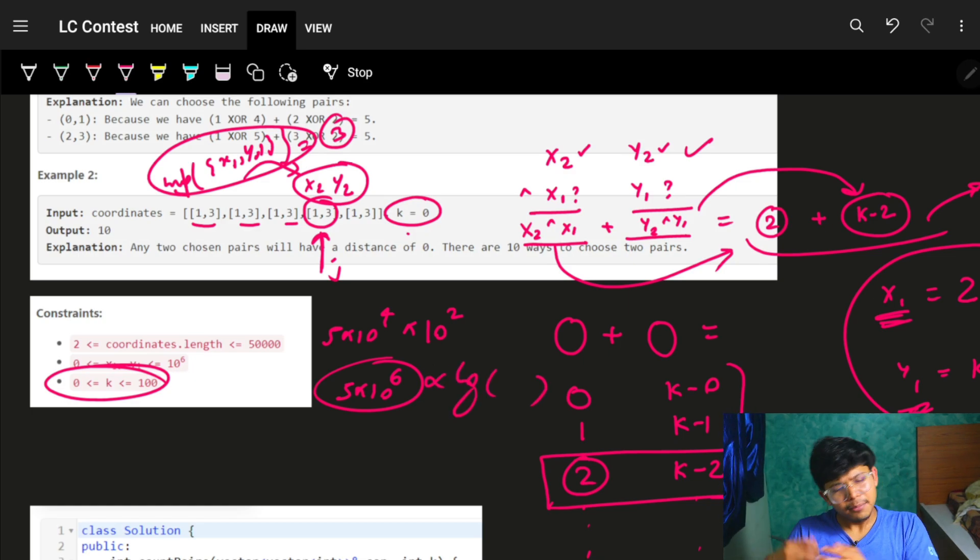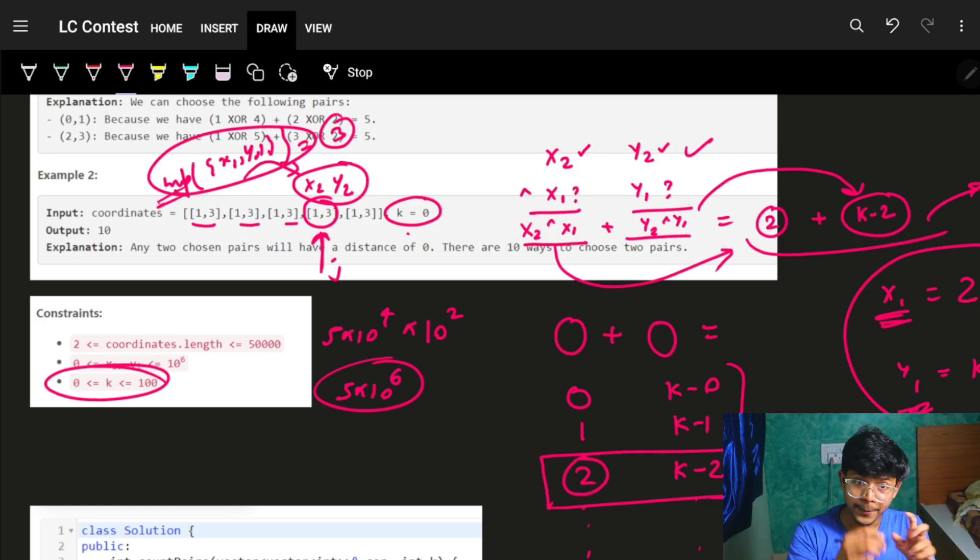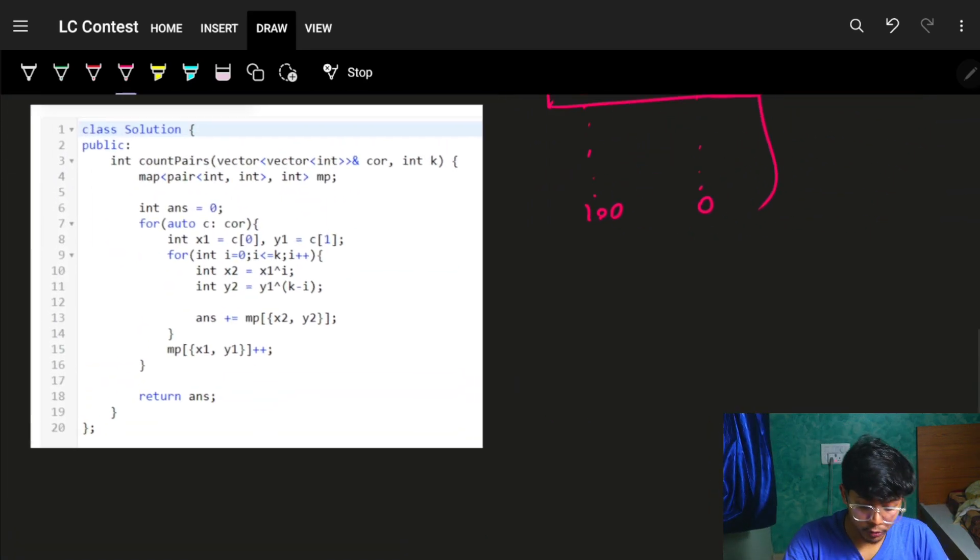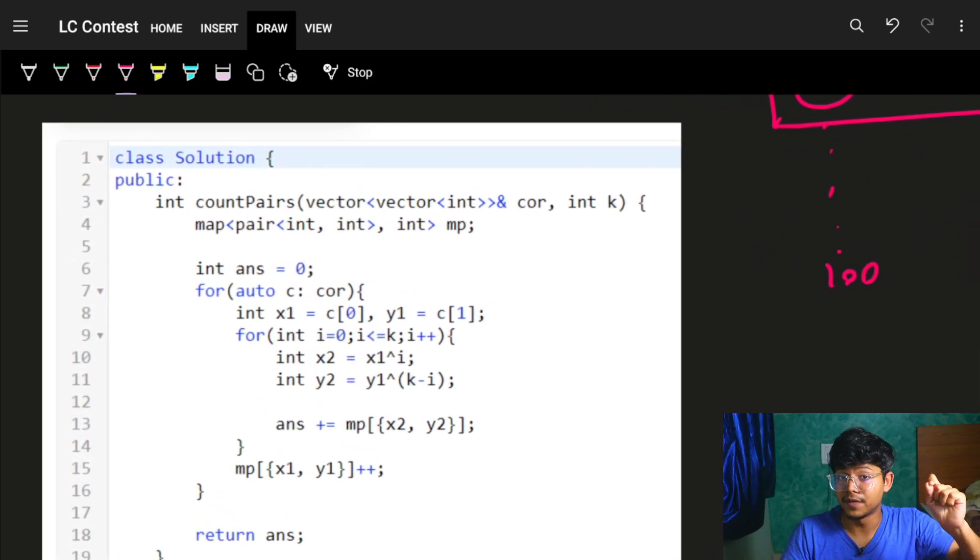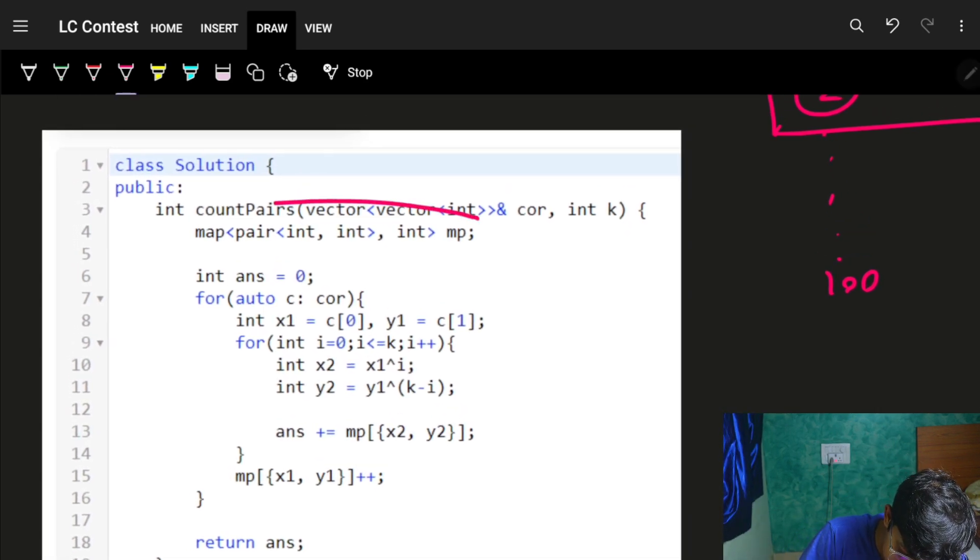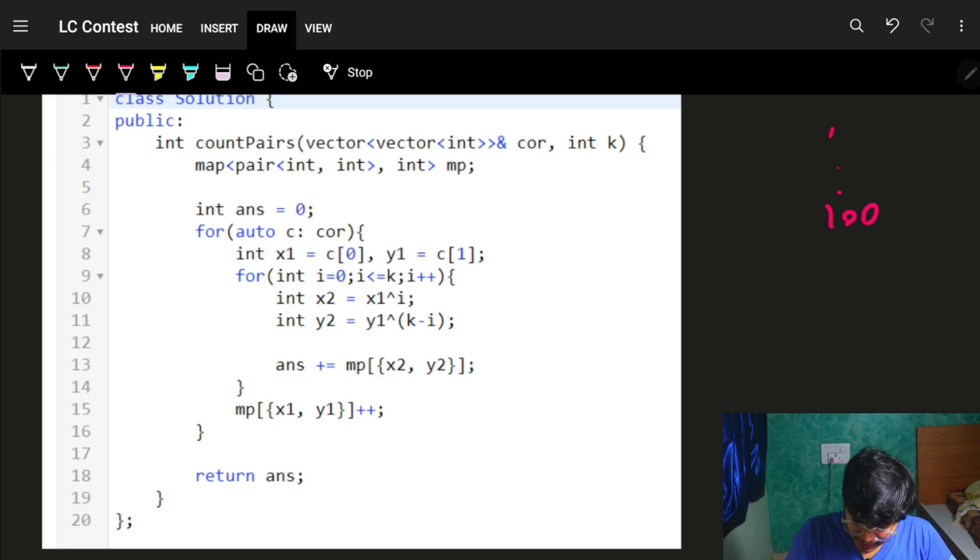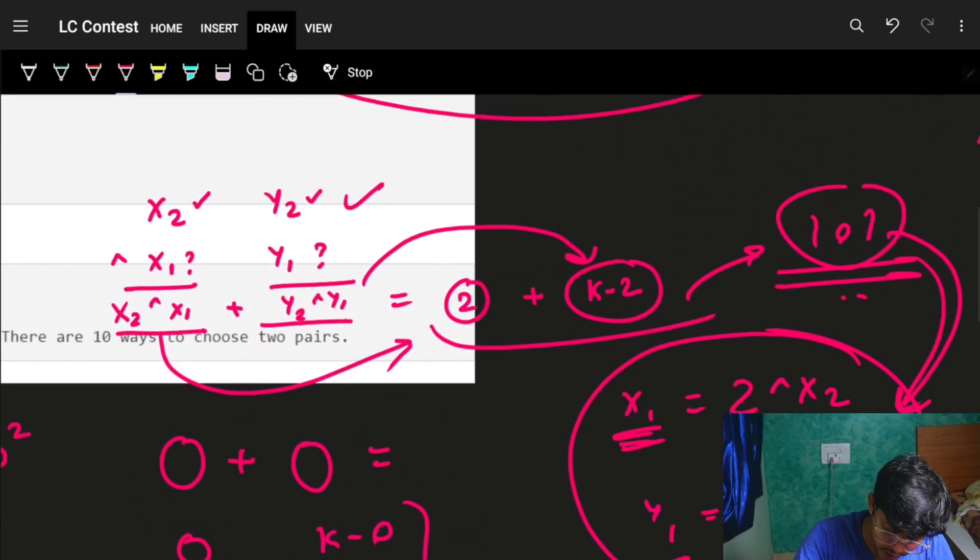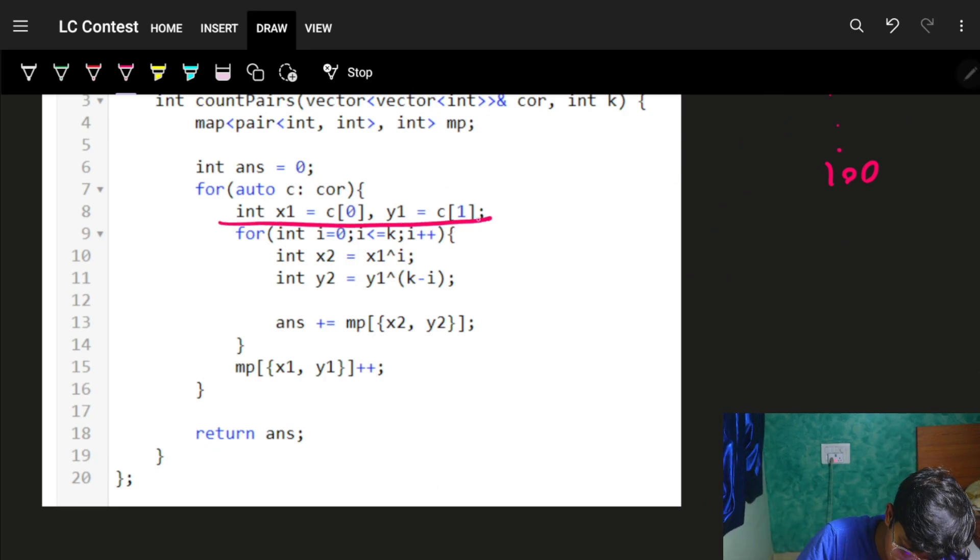Simply use a map to keep the count of such pairs previously, and find such pairs using simple XOR operations. This is much easier than the last question. It's from bi-weekly contest 113. I'm making a map of pair<int, int>. I have an answer variable. I go through all coordinates. For every coordinate, I find—although I've written x1, y1, you can imagine it as x2, y2.